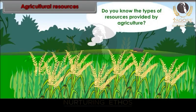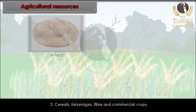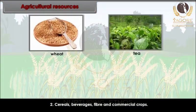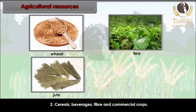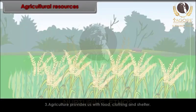Agricultural resources are the resources which we derive from agriculture. They provide raw materials to agro-based industries — cereals, beverages, fiber, and commercial crops. Agriculture provides us with food, clothing, and shelter.